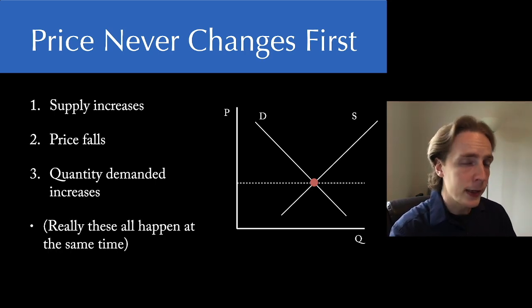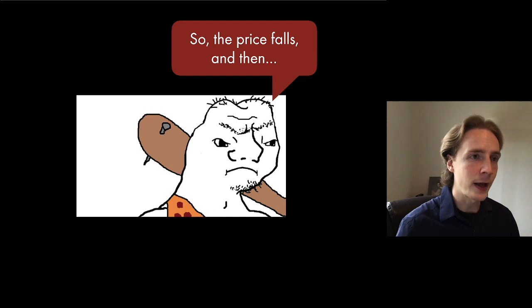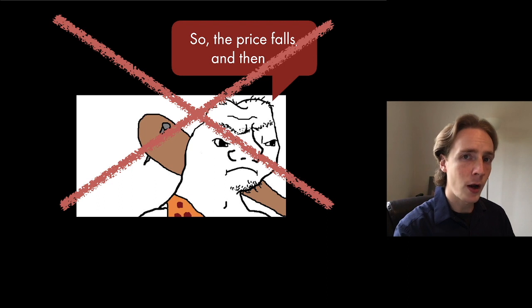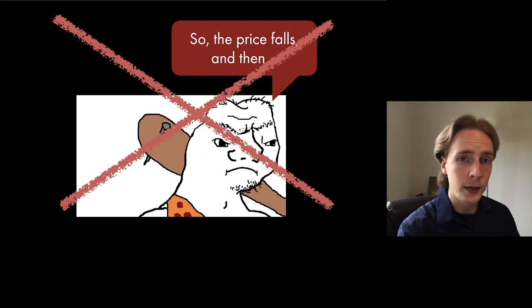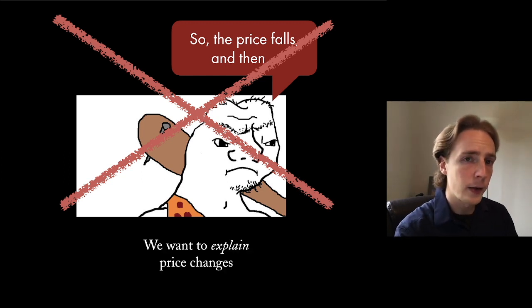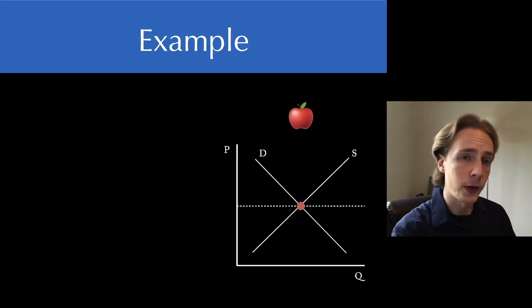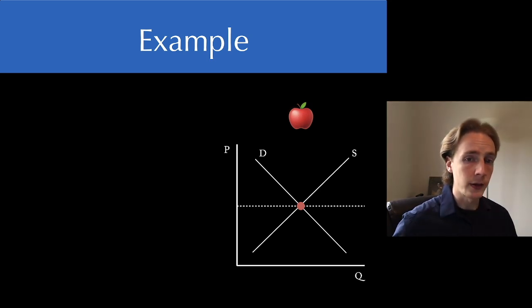These three things tend to happen at the same time or in very quick succession. But it's important that the first step is always the event, not the price change. Don't be the guy who says the price of gas goes up and this affects the economy in x, y, and z ways. We never want to start with a price change because it matters whether gas prices are increasing because of a fall in supply — maybe some pipeline got blown up — or because the demand increased. The effect on the economy depends on why prices increased. The price change is what we want to explain, not the thing we use to explain other things.